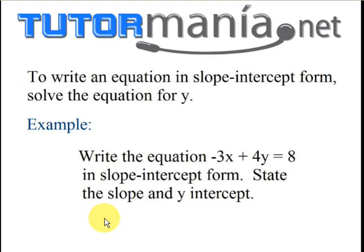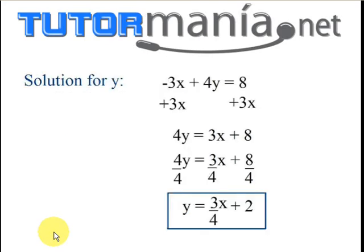Here's an example that many algebra students get for their homework. You have to write an equation in slope-intercept form. To write an equation in slope-intercept form, we're going to solve for y. Write the equation negative 3x plus 4y equals 8 in slope-intercept form. Here's a solution. We're going to solve for y. So we start off with the equation negative 3x plus 4y equals 8.